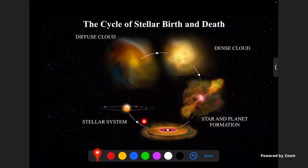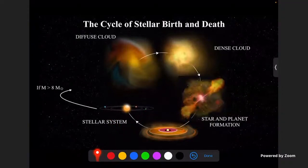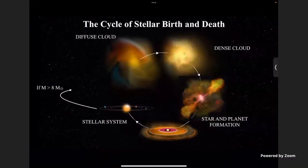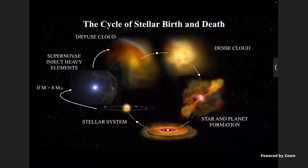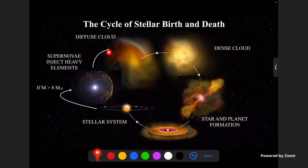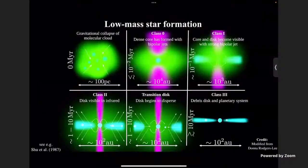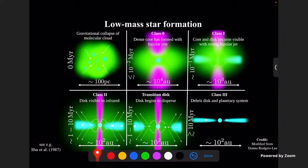Zooming into one of those cores, we enter the star and planet formation phase where we see jets and powerful outflows. The general picture is that the protostar goes into the protoplanetary disk phase, giving us a young protostellar system and finally a young stellar system with planets like our own. However, if the mass of the star exceeds eight solar masses, its life will end as a supernova, creating heavy elements that are re-injected back into the cloud to continue the cycle.